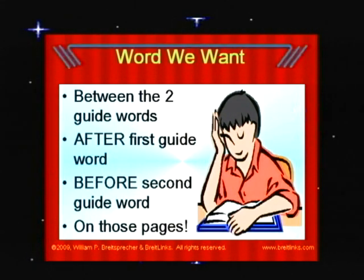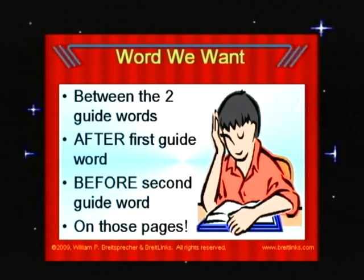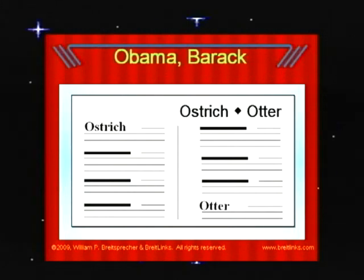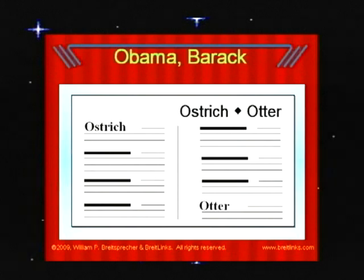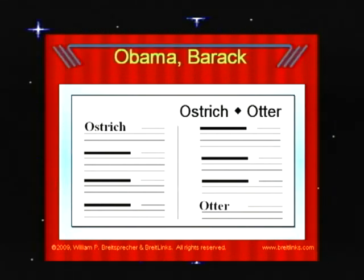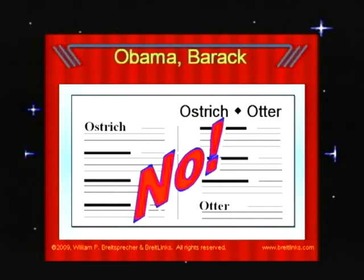Let me show you how easy this is. Let's look up President Obama. Remember, encyclopedias list people by their last name. If we want to look up Barack Obama, we look for Obama, Barack. The first guide word is ostrich — it's the first word on the first page. The second guide word is otter — it's the last item covered on the second page. Notice that OBA would come before OST because B comes before S. It's before the first guide word, so Barack Obama will not be on this page.